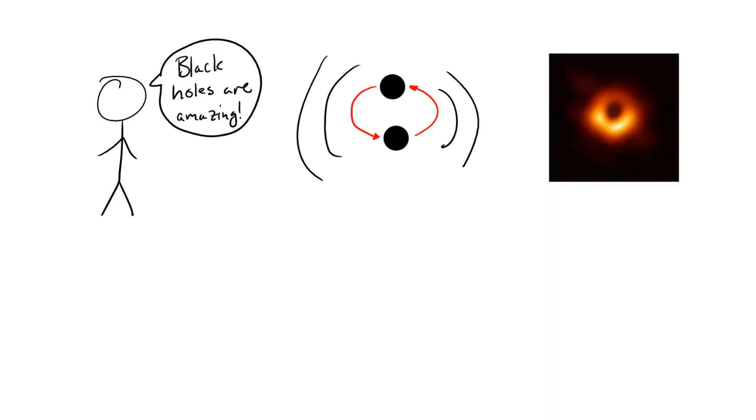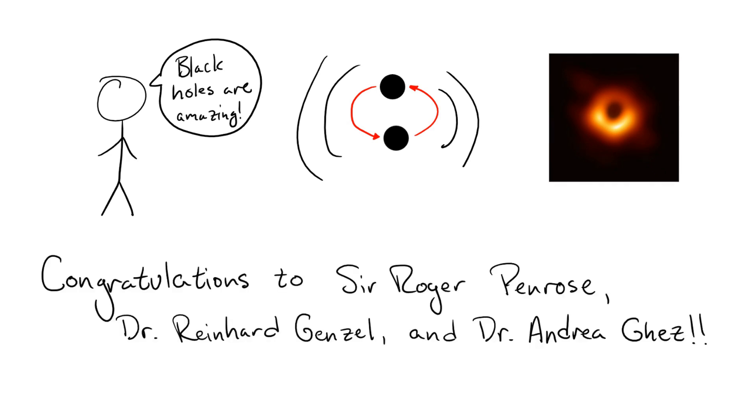Black holes are amazingly extreme objects that have seen a huge surge of interest after recent observations of gravitational waves from black hole mergers, and the event horizon telescope producing actual images of the black hole at the core of the galaxy M87. It's only fitting that Penrose, Genzel, and Ghez are recognized for their early revolutionary work with some of the most fascinating objects in our universe.